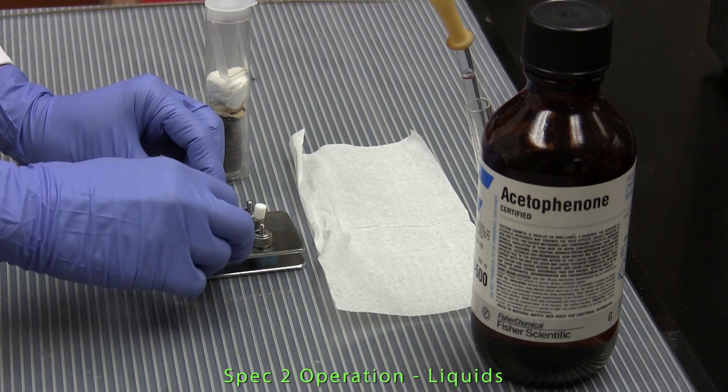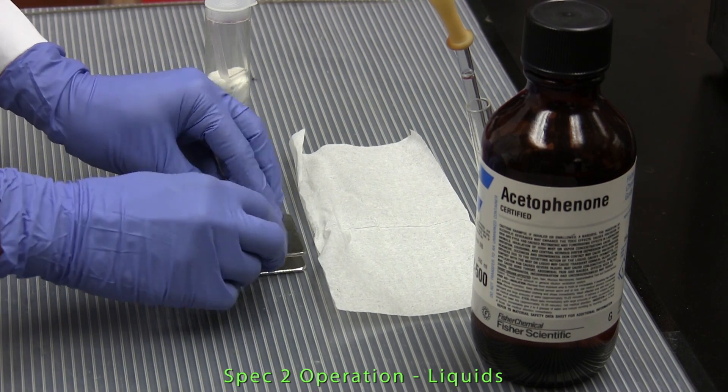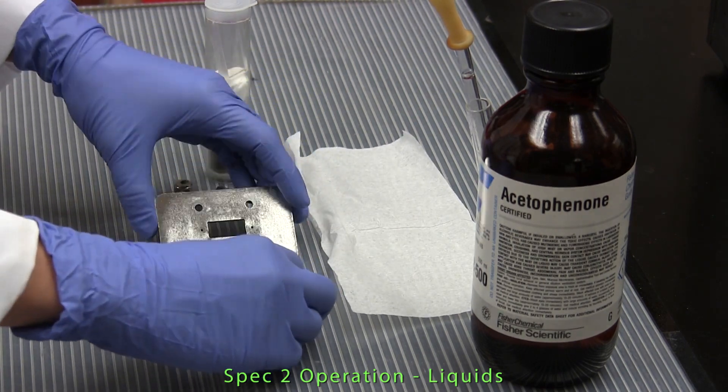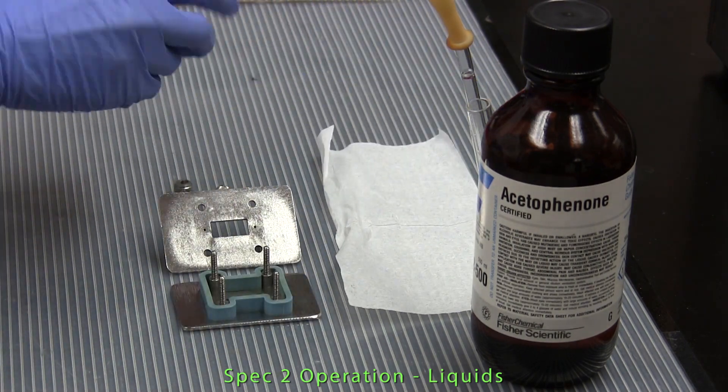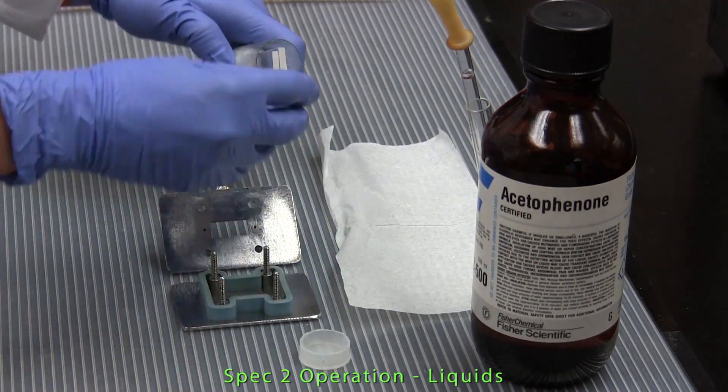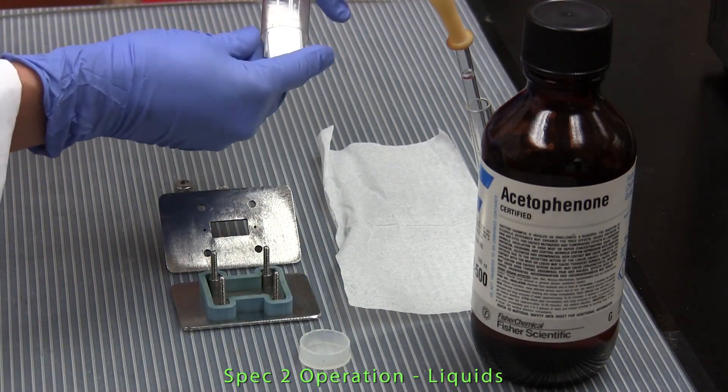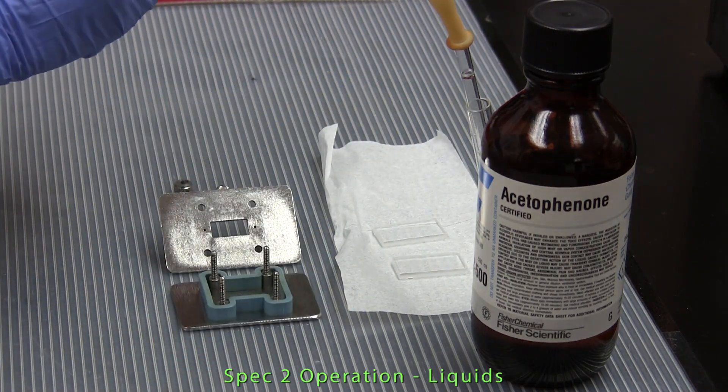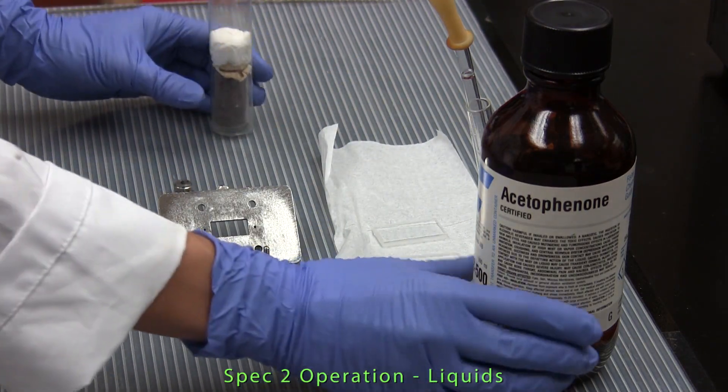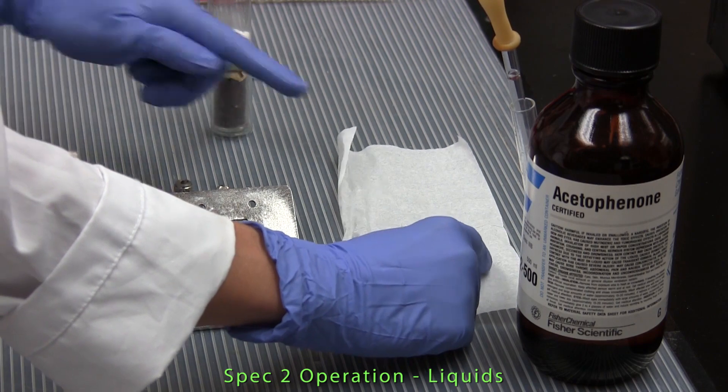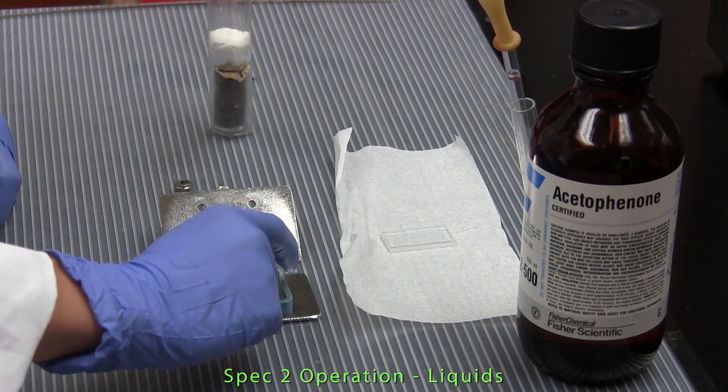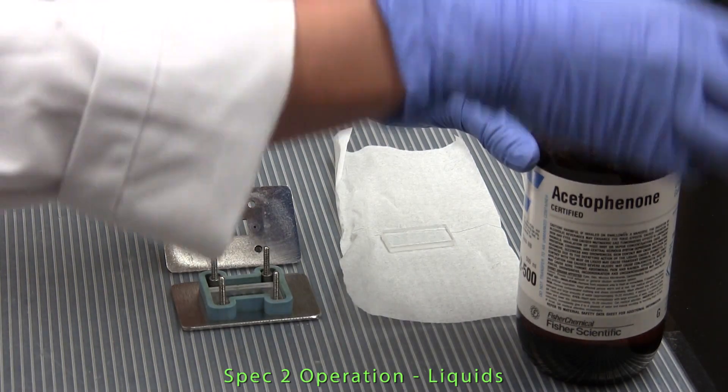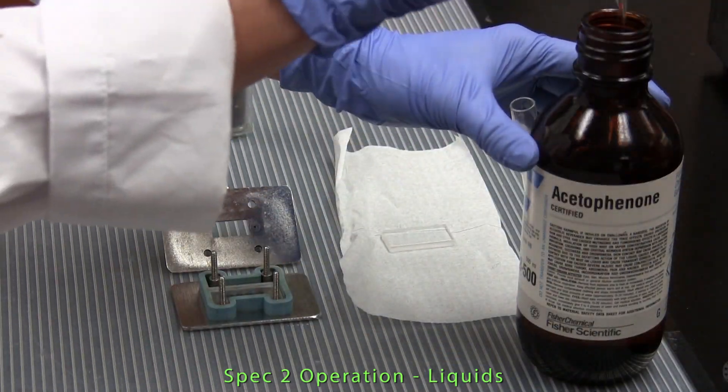We use a demountable cell and a set of polished sodium chloride plates. The cell is disassembled and the sodium chloride plates are removed from their container, handling carefully only by the outer edges. One plate is placed inside the cell and a drop of liquid is placed in the center of the plate.